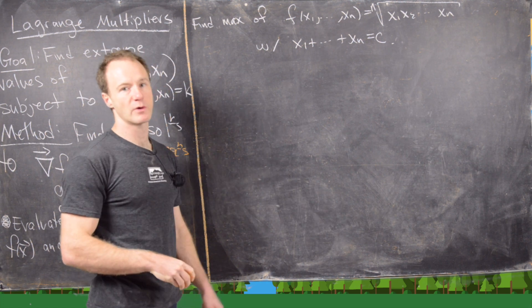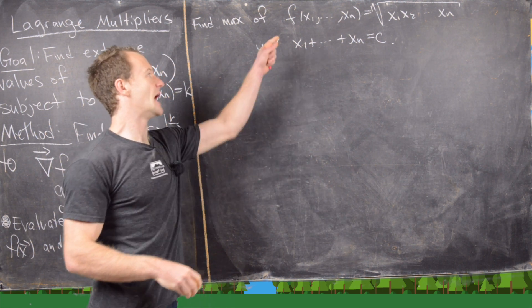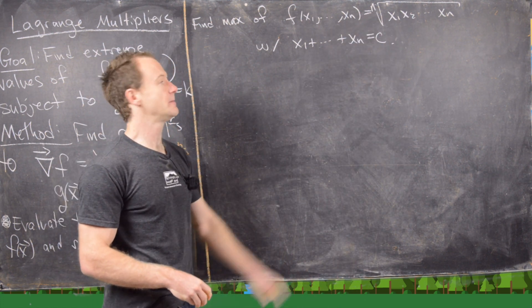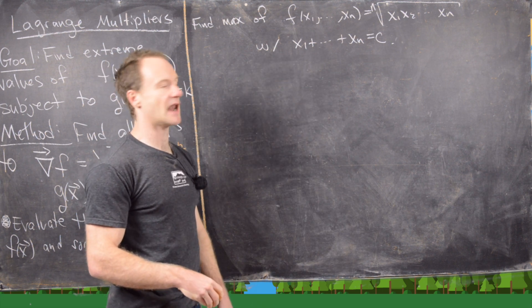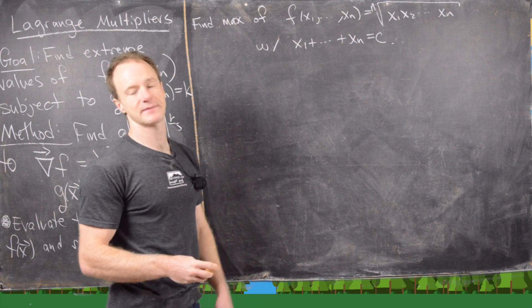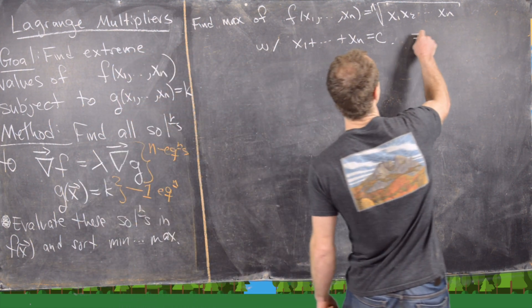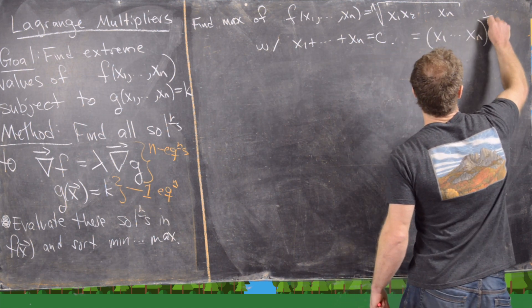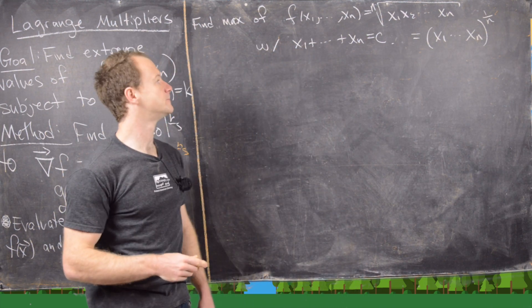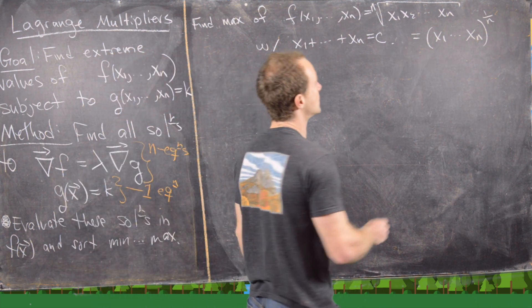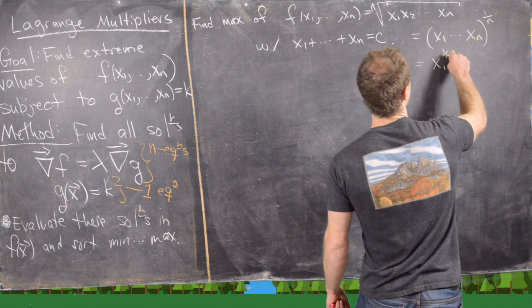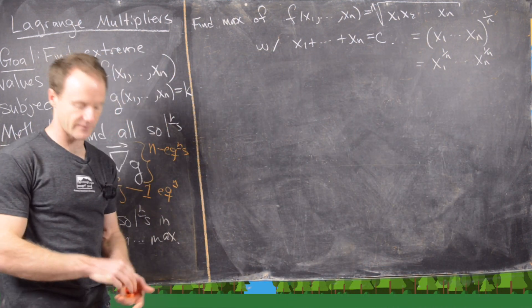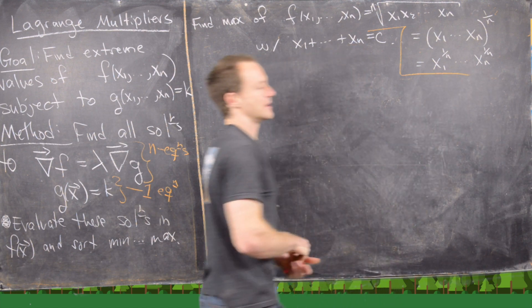For the next example, we want to find the maximum of f of x1 to xn, defined as the nth root of the product x1 through xn, subject to the constraint x1 plus x2 up to xn equals a constant c. Notice this is the same as (x1 times … times xn) to the 1 over n power, which equals x1^(1/n) times … times xn^(1/n). That form will be helpful shortly.